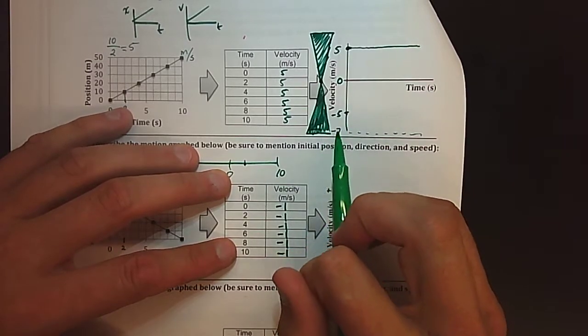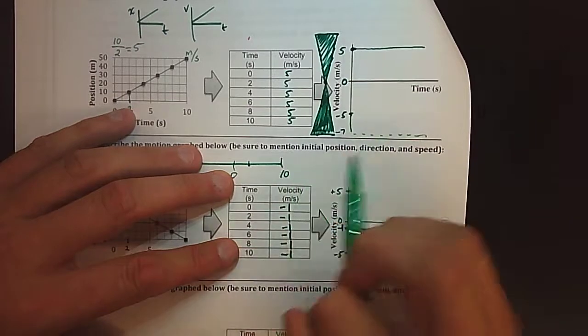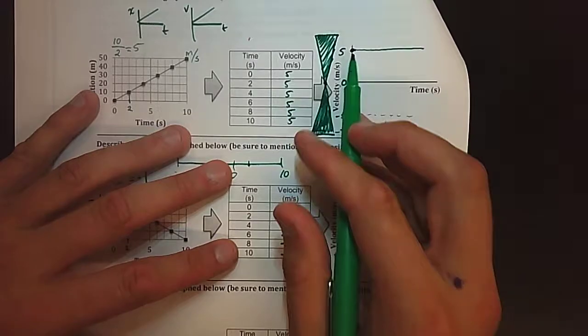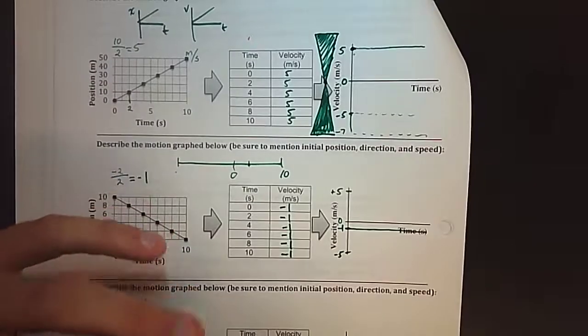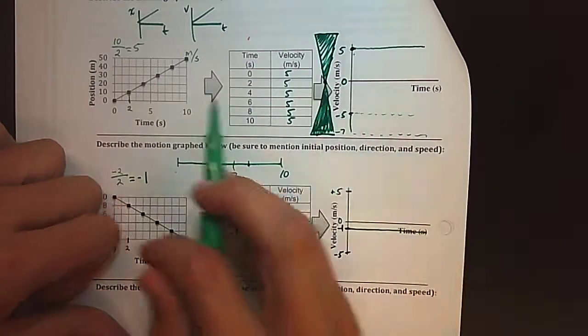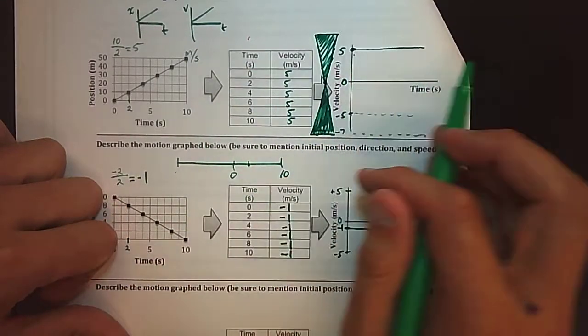All they mean is that my object's going to the left. So if I had an object that's going negative five meters per second and five meters per second, they're going the exact same speed. The only difference is this one's going to the left and this one is going to the right.